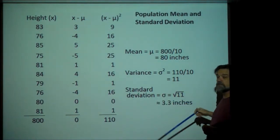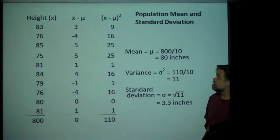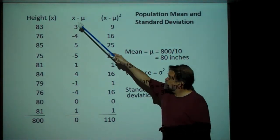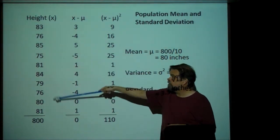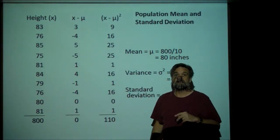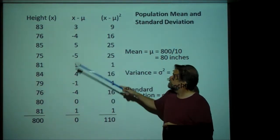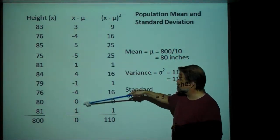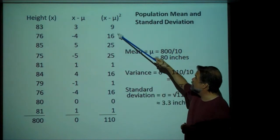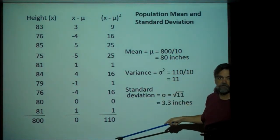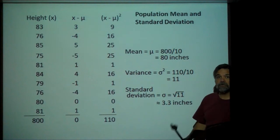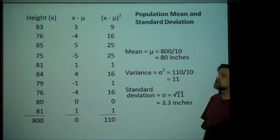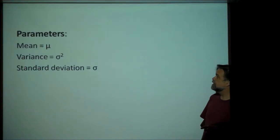If the standard deviation were zero, that means each one of these data points would be exactly the same. Your distances would be zero, and the squared distances would also be zero. So that's your population standard deviation.